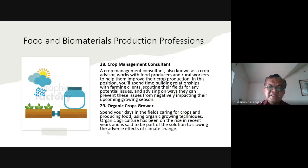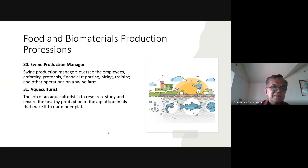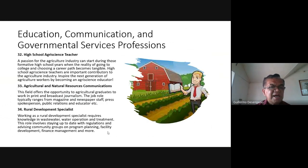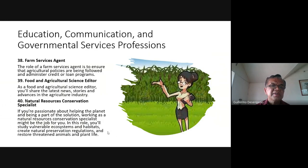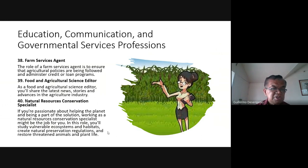Other professions include: forest manager, crop management consultant, organic crops grower, swine production manager, aquaculturist, high school agri-science teacher. Schools are really looking for people to teach agriculture at the high school level. Also: agricultural and natural resource communications, rural development specialist, plant and animal inspector, outdoor recreation manager, agricultural extension educator, farm service agent, and food and agricultural science editor. If you enjoy writing, posting, and making articles, publication is a good path.